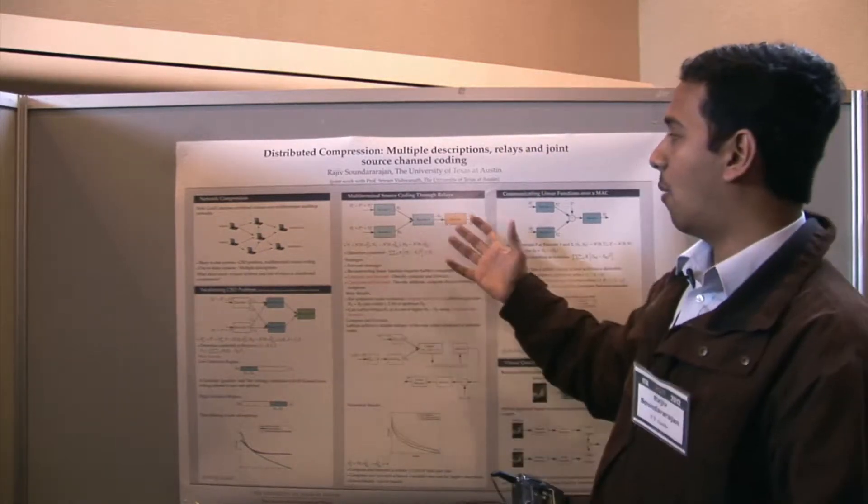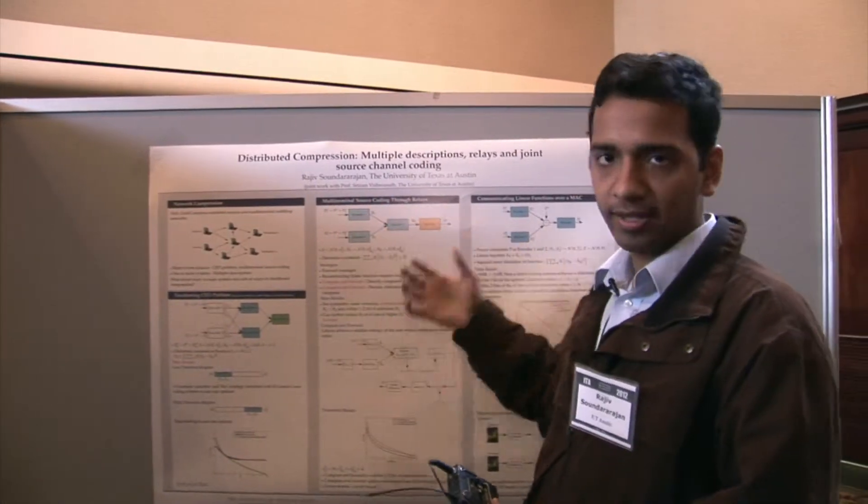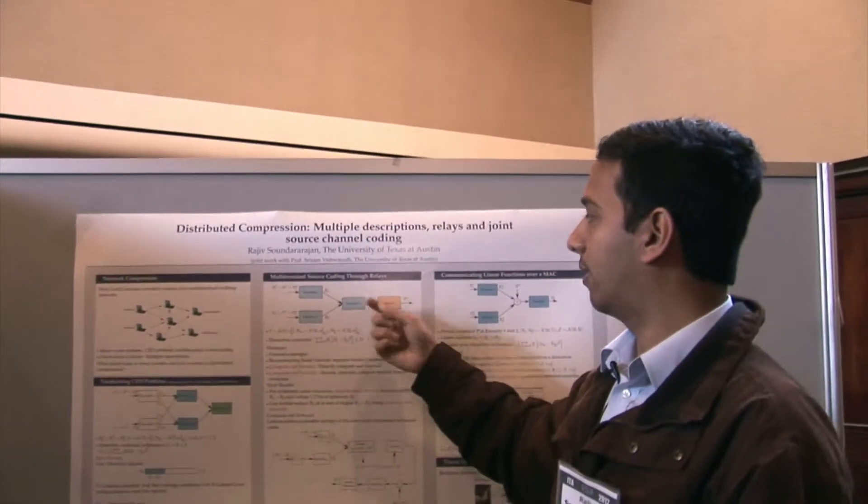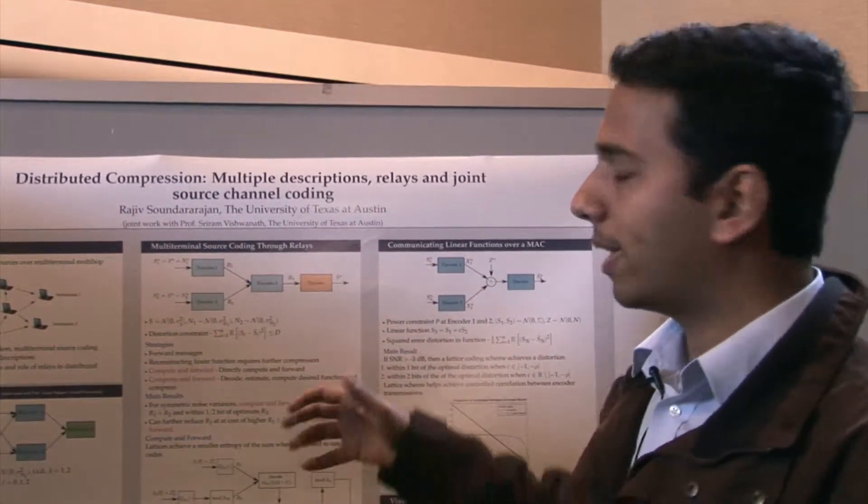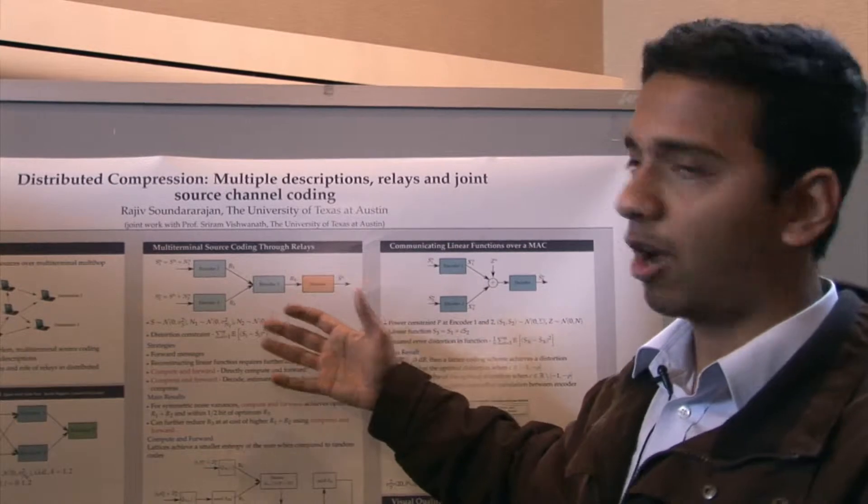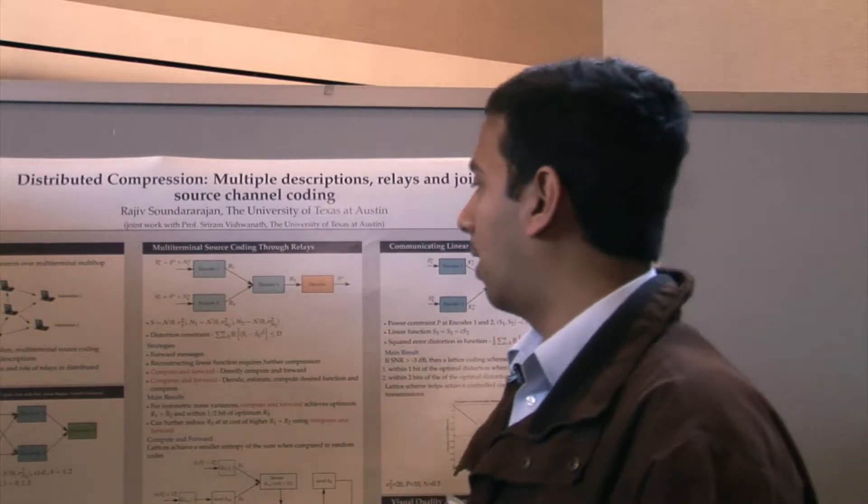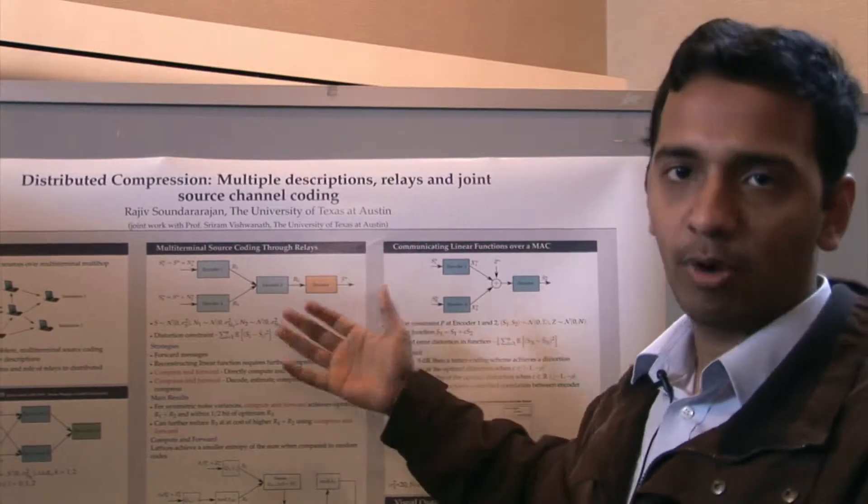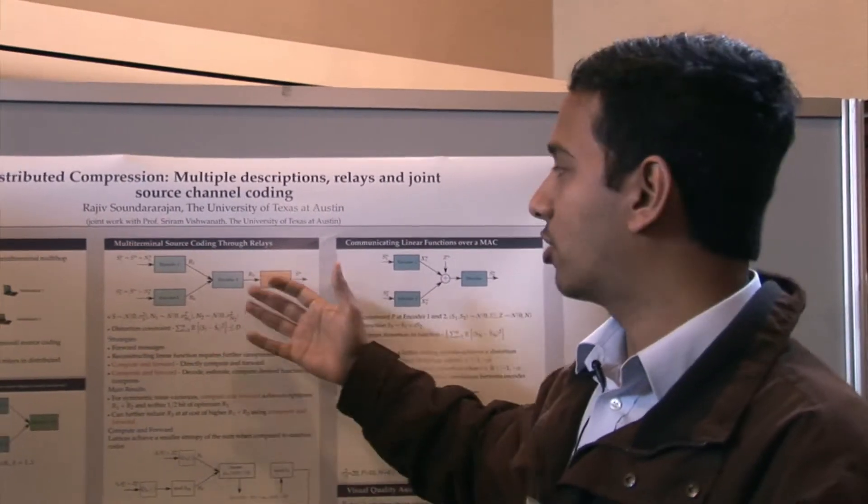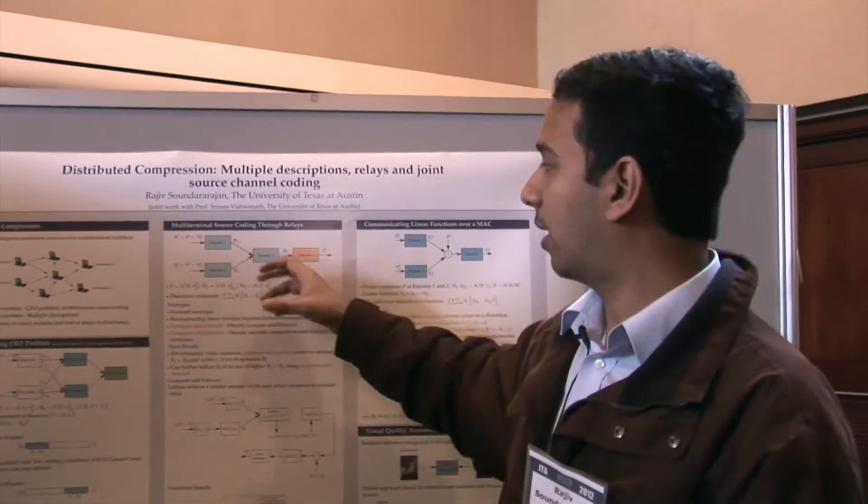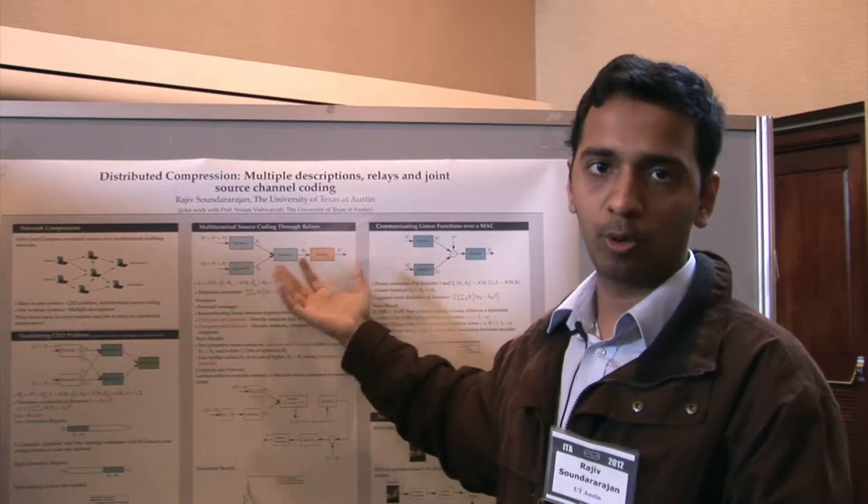We also consider what happens if you wanted to code for the CEO problem through relays. The key question is what the relay has to do in order to compress these two sources. We come up with a lattice coding scheme that achieves within a constant bit of the lower bound in the distortion. The relay could have simply forwarded the individual messages or compressed it, but we show that computing the sum and then sending it out achieves a better rate when compared to the other two strategies.